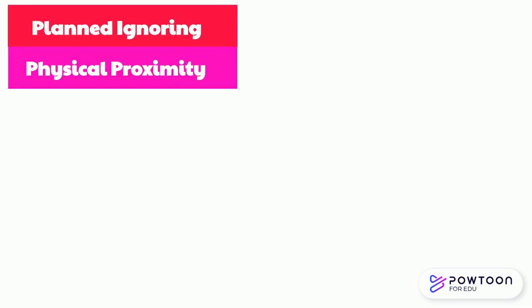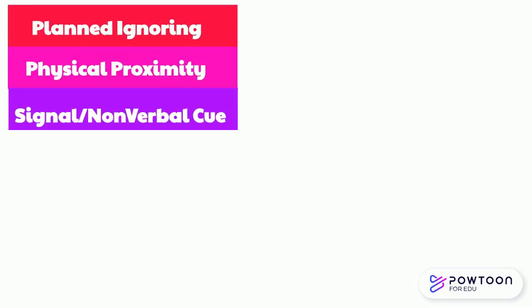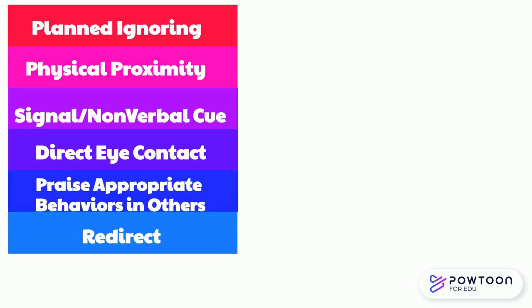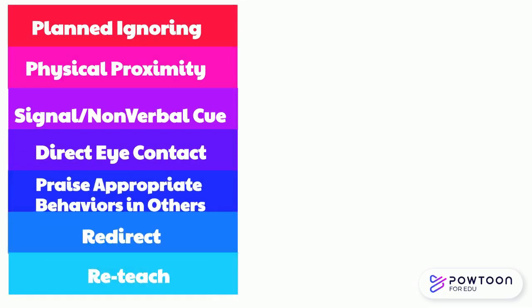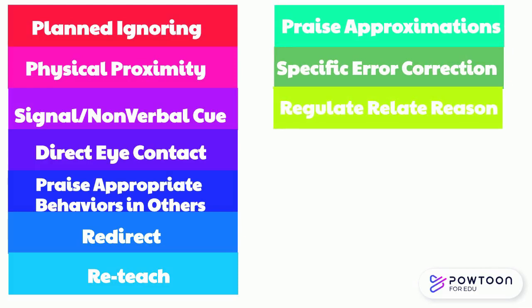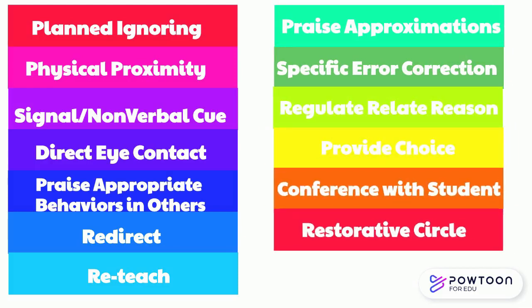The continuum of strategies are: planned ignoring, physical proximity, signal nonverbal cue, direct eye contact, praise appropriate behaviors in others, redirect, reteach, praise approximation, specific error correction, regulate, relate, reason, provide choice, conference with student, and restorative circle.